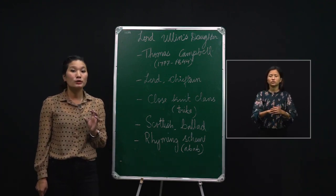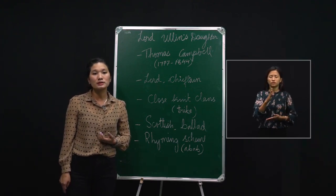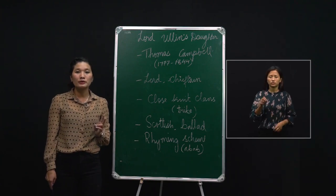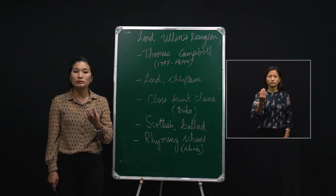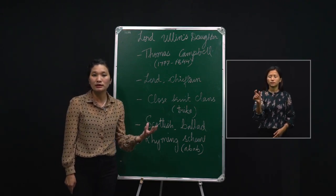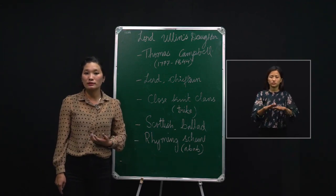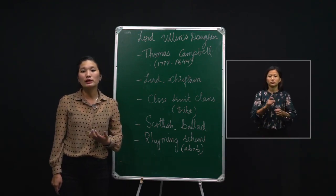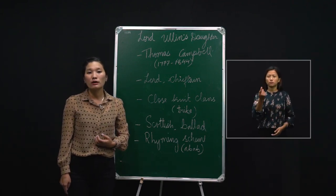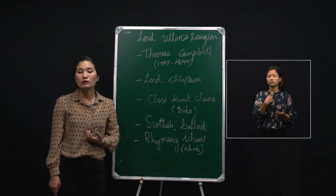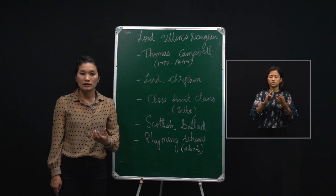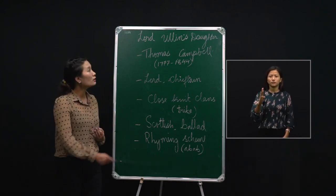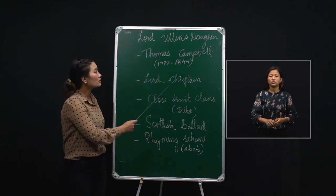Before getting into the poem, you might have heard about marriages being settled — sometimes parents want a different type of partner for their children, whereas the child may admire someone for certain qualities. Some parents have cultural restrictions: they want their children to marry someone of the same culture, religion, or even the same clan. In this poem there are three main characters: Lord Alin, his daughter, and the chieftain.